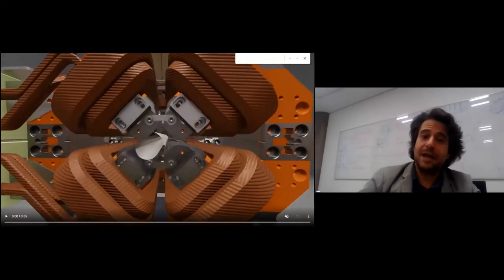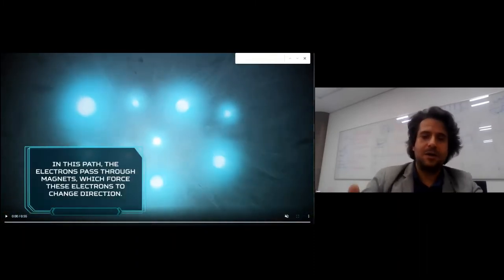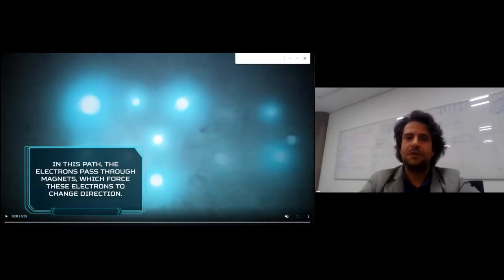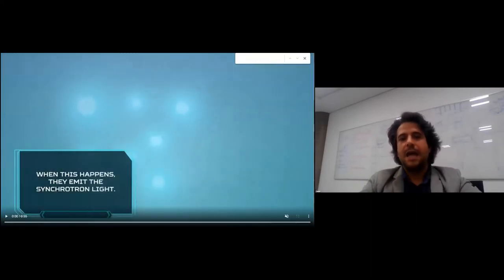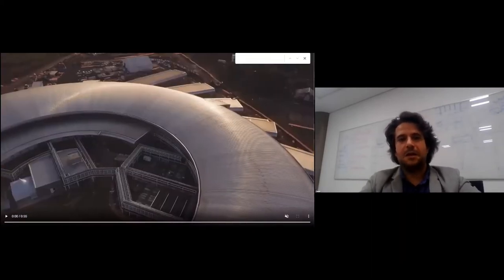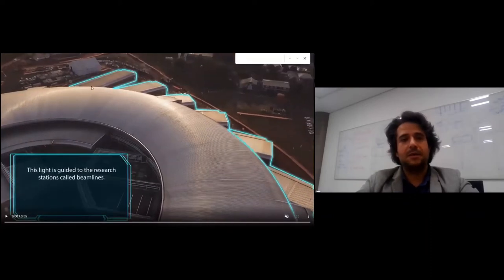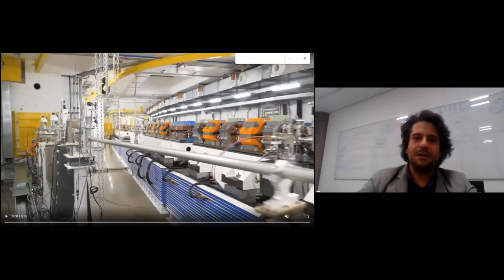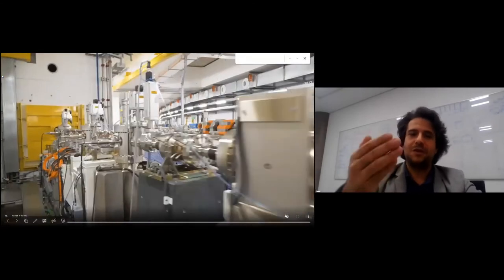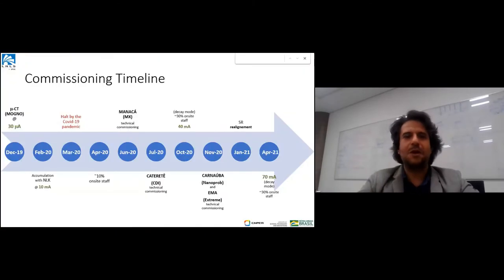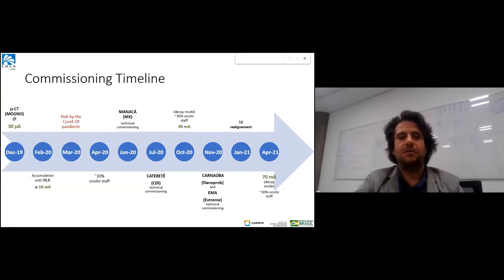We used NEG coating technology for vacuum parts as most new generation synchrotrons. We have several extended beamlines that go up to 150 meters. This is the front end, the part that connects the storage ring to the external part. Let me give you a timeline since installation and first commissioning results.